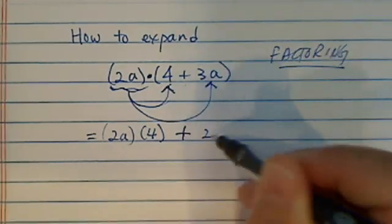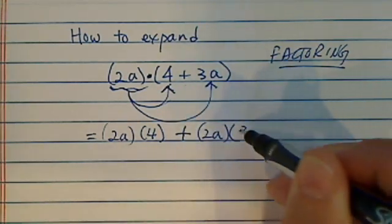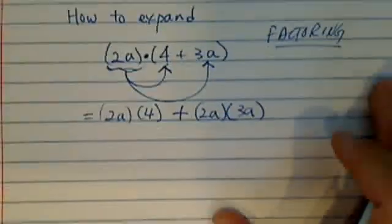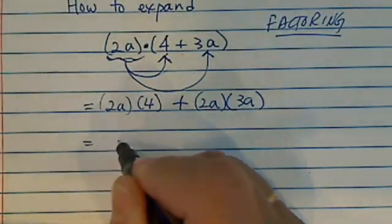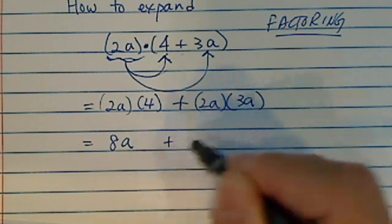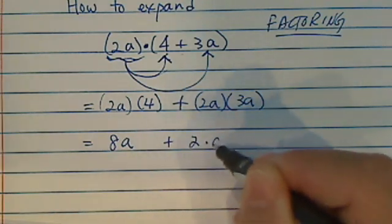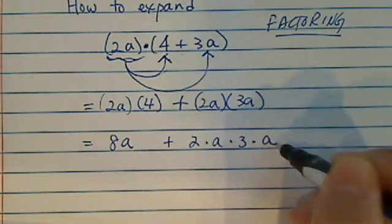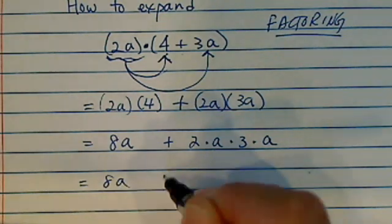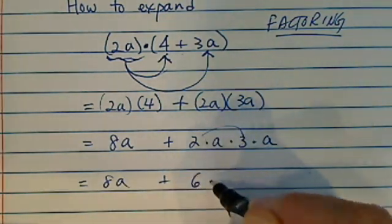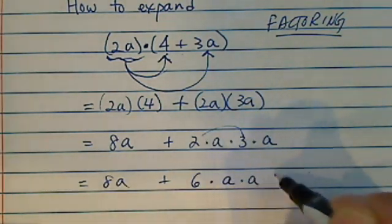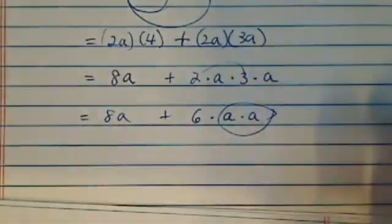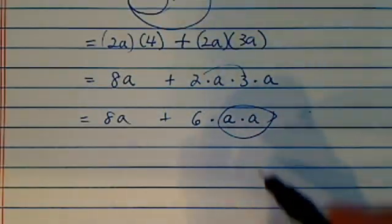This plus sign, and then 2a takes the invitation to 3a, and so on. 2a times 4—that's 8a. And from here it's 2 times a times 3 times a, so what you have is 6 times a times a.